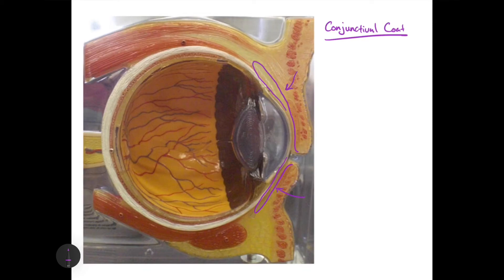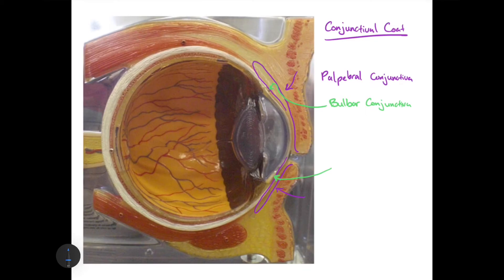The conjunctival coat can be broken into three parts. The portion found on the eyelids is called palpebral conjunctiva. The portion found more directly on the eyeball is called bulbar conjunctiva. Where the bulbar and palpebral conjunctiva meet at an angle — colored in blue here — is called the superior or inferior conjunctival fornix, depending on which side.